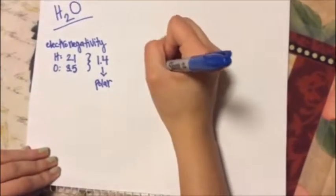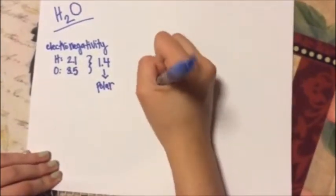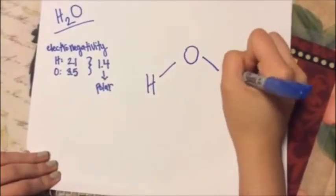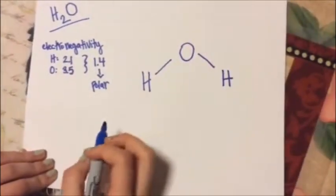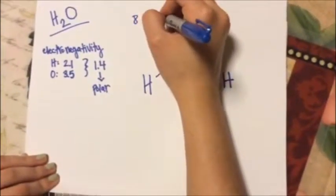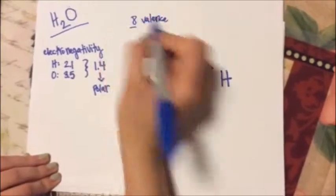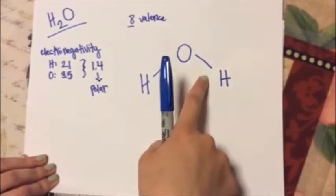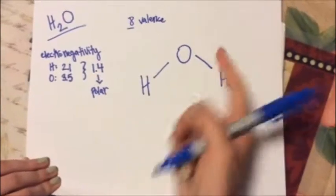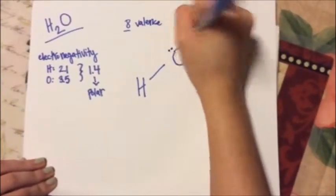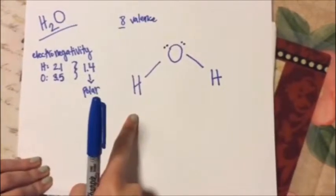Now to draw the Lewis dot structure we'll put hydrogen, oxygen, and hydrogen. H2O needs 8 valence electrons. Hydrogen can only hold 2, so you put the line that represents 2 for each so hydrogen is full. But oxygen needs 8, so you add 4 so in total it has 8 valence electrons.